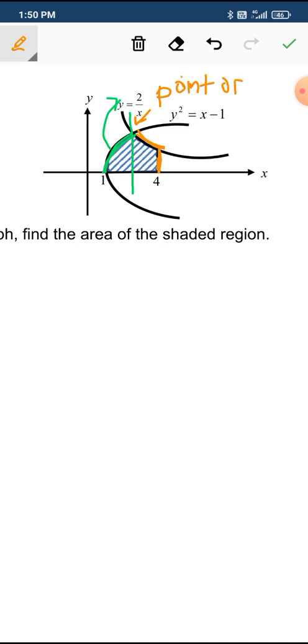Point of intersection - you have to split them into two regions. Maybe you want to find this is A1 and this is A2. So let's find the point of intersection.